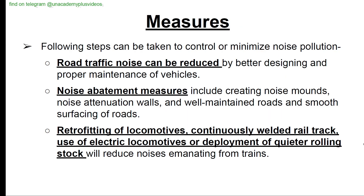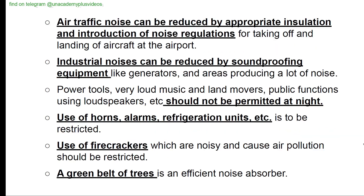Measures to control noise pollution include: reducing road traffic noise using noise mounts and attenuation walls; retrofitting locomotives with continuously welded rail track and quieter rolling stock; reducing air traffic noise with insulation and noise regulations; soundproofing industrial equipment; restricting use of horns, alarms, loudspeakers, and firecrackers at night; and planting green belts of trees, which are efficient noise absorbers.